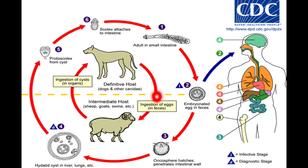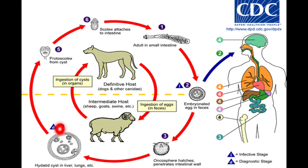After ingestion by sheep, the oncosphere larvae migrate to various organs of the body such as bones, kidneys, and brain, but most commonly they go to the lungs and liver. When the oncosphere larvae reach the lungs or liver, they create a cyst known as a hydatid cyst. This cyst has an outer covering and an inner germinal layer, from which different scoleces — the heads of the worms — are generated.